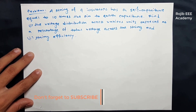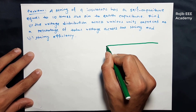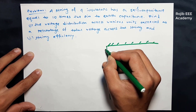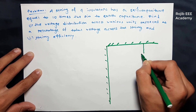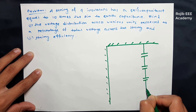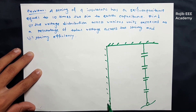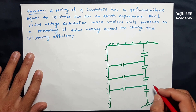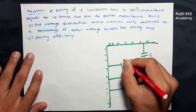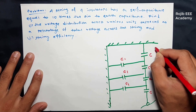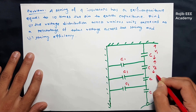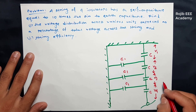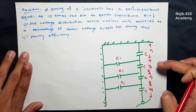We have to draw the four-insulator string. We draw the conductor and the shunt capacitors. The self-capacitance is C and the shunt capacitance is C1. Both are across voltages V1, V2, V3, and V4 respectively. The total voltage V is equal to V1 plus V2 plus V3 plus V4.